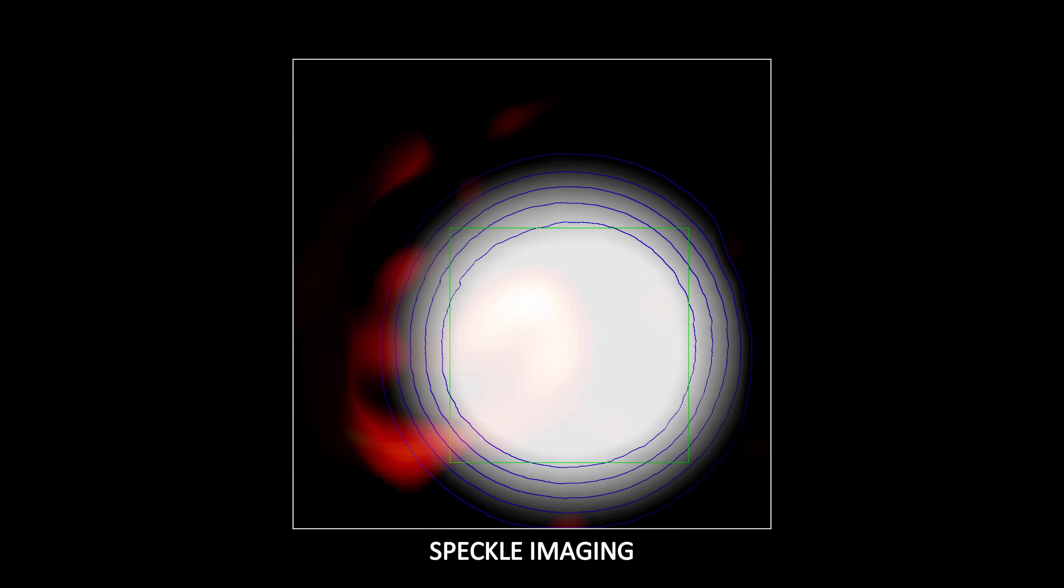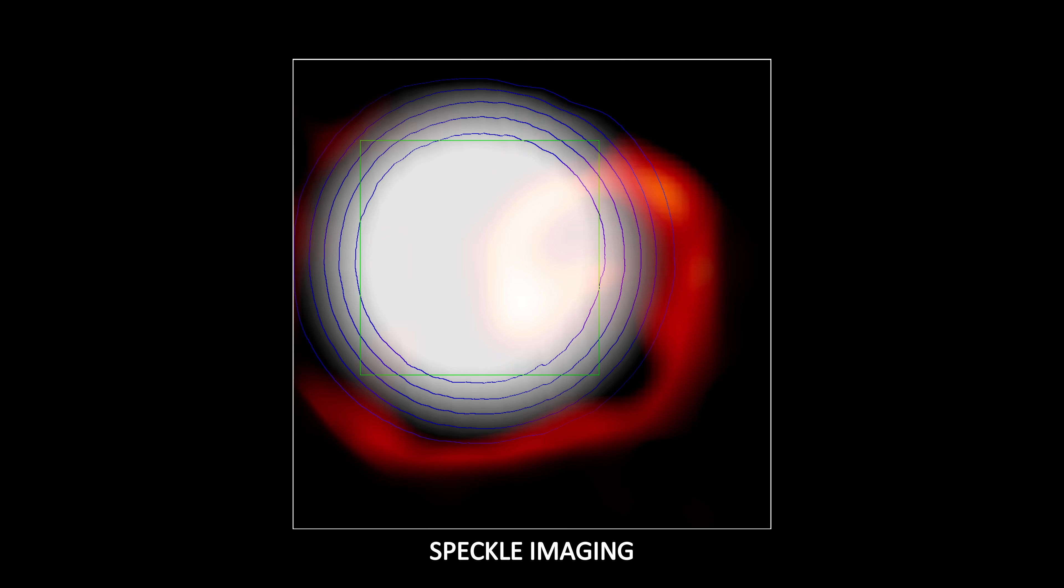What makes it unique is its speckle imaging ability, a kind of astronomical imaging technique that uses very short exposure times to freeze out the distortions that are caused by Earth's atmosphere. This technique enables high resolution, which when combined with the light-collecting power of Gemini North's 8.1-meter mirror, allowed for Betelgeuse's faint companion to be directly detected for the first time ever.